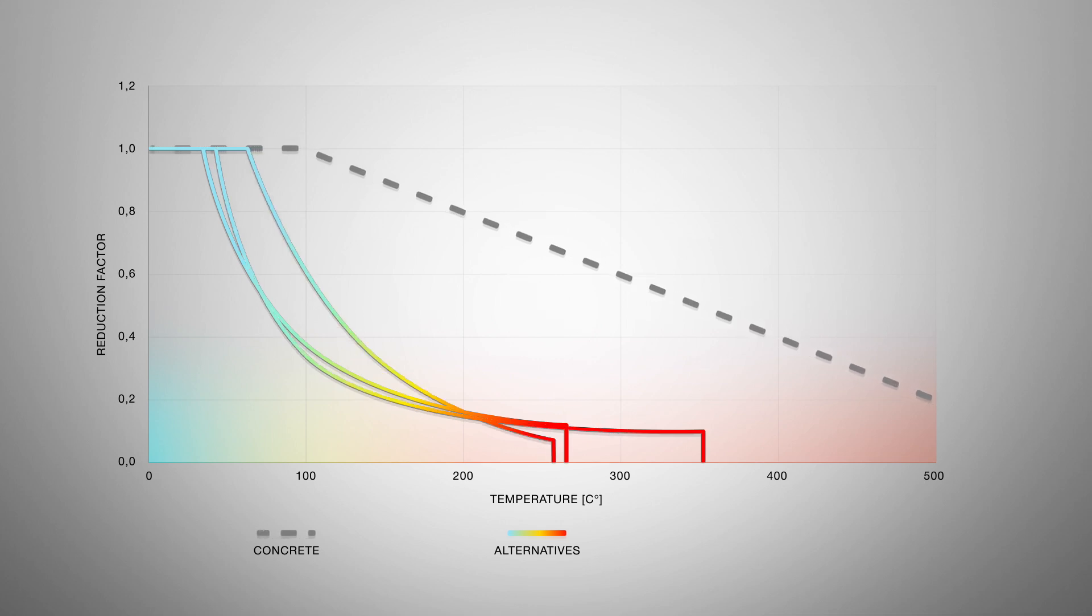Now, Hilti's new FP700R offers a solution as it was developed to resist temperatures up to 500 degrees with limited bond strength loss.